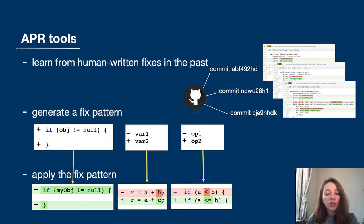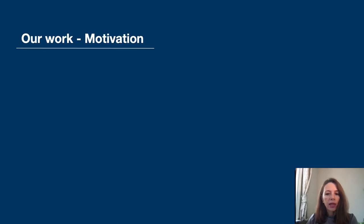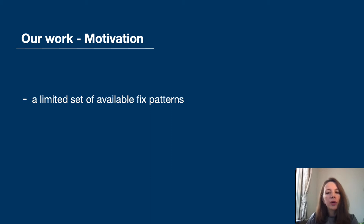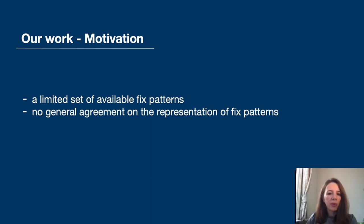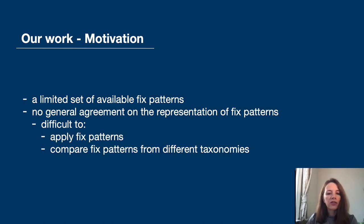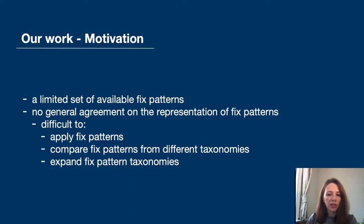The more fixed patterns we have, the greater range of bugs can be fixed automatically. Apart from the limited set of available fixed patterns, there is also still no general agreement on the representation of fixed patterns. As a consequence it is difficult to apply fixed patterns, compare fixed patterns from different taxonomies, and also to expand existing taxonomies.